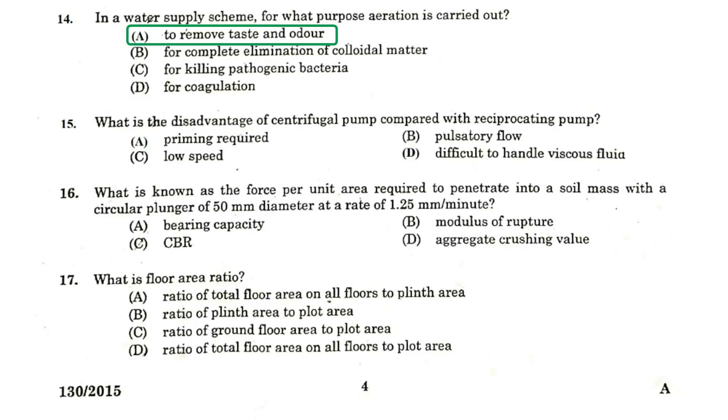What is the disadvantage of centrifugal pump compared with the reciprocating pump? It requires priming. What is known as the force per unit area required to penetrate into a soil mass with a circular plunger of 50 mm diameter at a rate of 1.25 mm per minute? CBR California bearing ratio. What is the flow area ratio? Ratio of total flow area on all floors to the plot area.